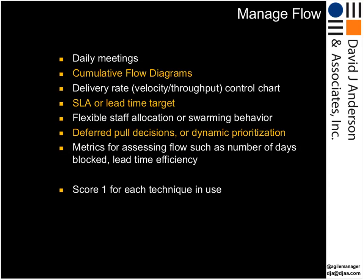The third dimension is 'manage flow.' Aspects here include daily meetings, cumulative flow diagrams, measuring delivery rate — sometimes known as velocity or throughput, plotted in a run or control chart — having a lead time target or service level agreement, flexible staff allocation or swarming behavior, deferred pull decisions, and metrics for assessing flow such as number of days blocked and lead time efficiency. Scoring one for each aspect gives a score of zero to seven.